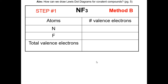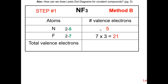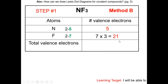Method B is a much easier method for beginners. Just follow the four-step procedure in the packet and you'll get the answer right every time. I recommend method B because it's a much simpler and more consistent method than method A. In step one, count the total number of valence electrons in the molecule. For NF3, nitrogen has five valence electrons and fluorine has seven. Since there are three fluorines, seven times three is 21, so the total is five plus 21, which is 26.